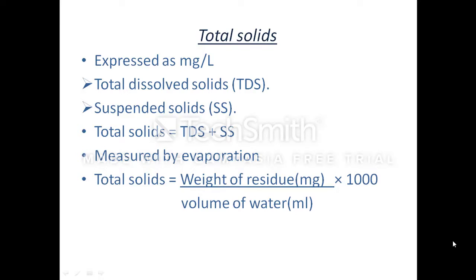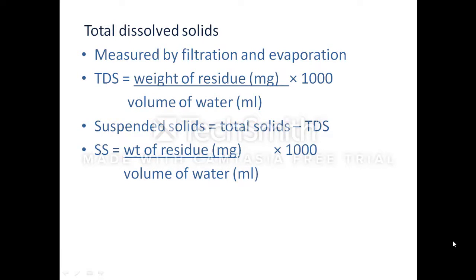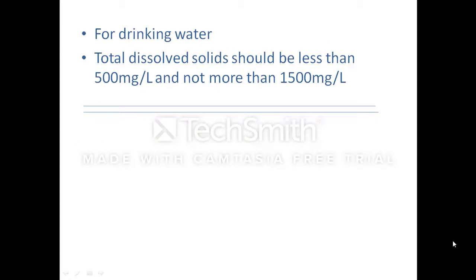To determine total dissolved solids, the water is first passed through filter paper so that suspended solids are removed. The suspended solids remain on the filter paper and dissolved solids pass with the water. Then the water is evaporated to dryness in an oven. Total dissolved solids equals weight of residue divided by volume of water multiplied by 1000. For suspended solids, simply subtract total dissolved solids from total solids, or weigh the residue left on the filter paper — suspended solids equals weight of residue divided by volume of water multiplied by 1000. For drinking water, total dissolved solids should be less than 500 mg/L and not more than 1500 mg/L.